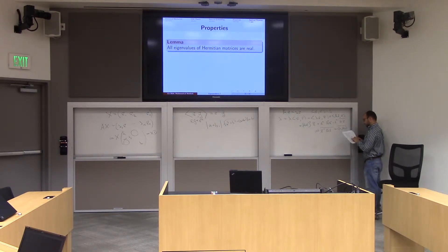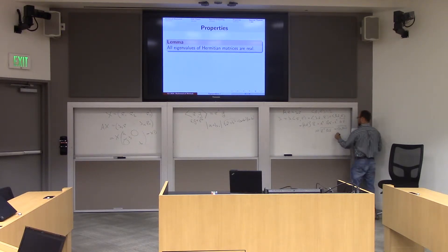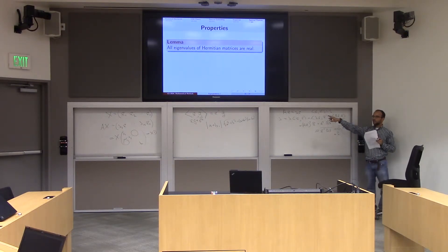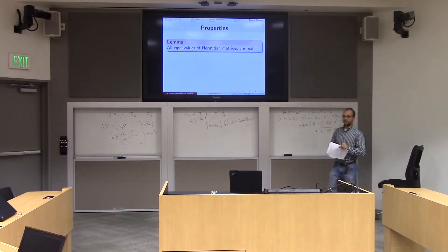And what is this? Well, we can put lambda here. So in the end, what's going to come out? A bar. So lambda is equal to its complex conjugate, and we're done. That means that it has to have a zero imaginary part.